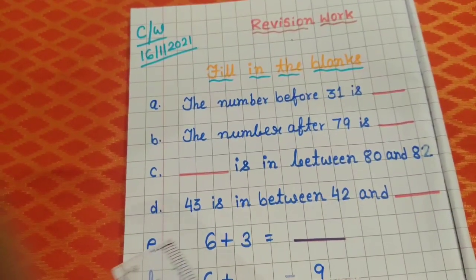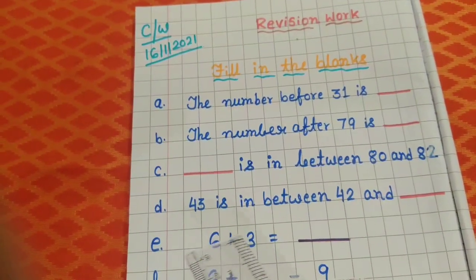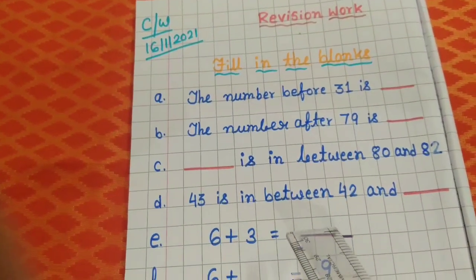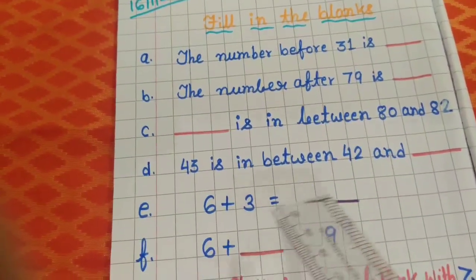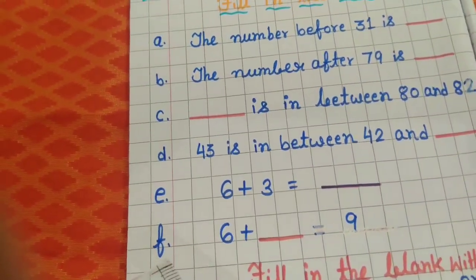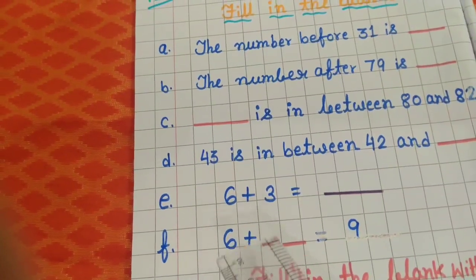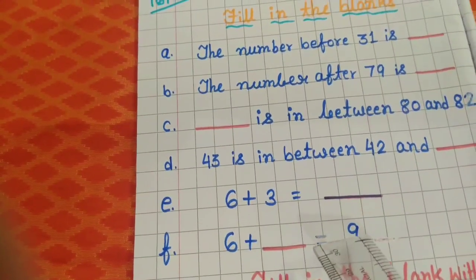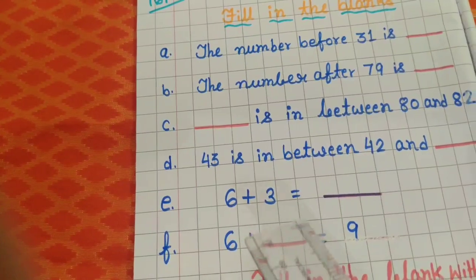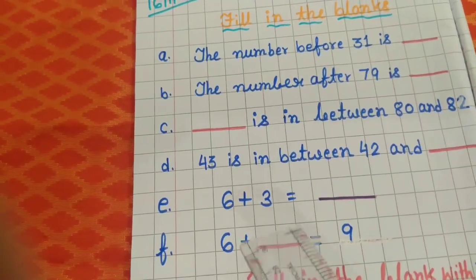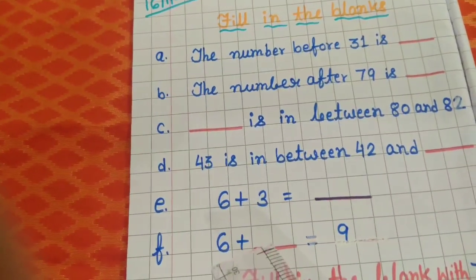Number E. 6 plus 3 is equal to dash. Number F. 6 plus dash is equal to 9. So you have to think about it and write your answer here. Understood?